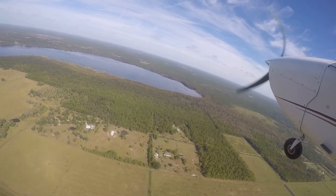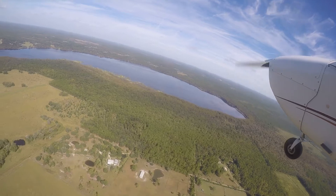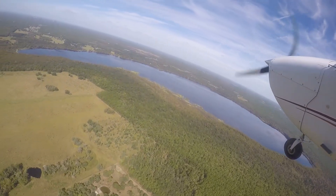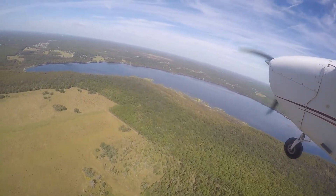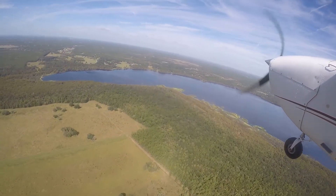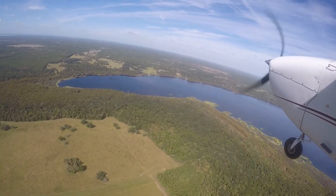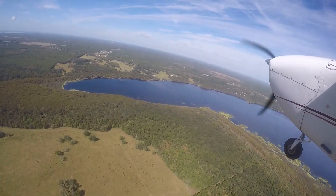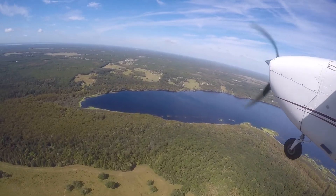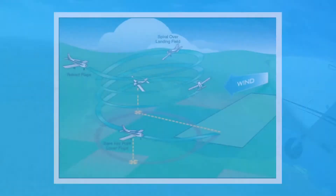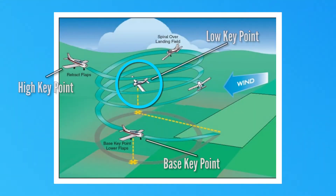Upon arriving over the high key point at 1,000 feet above ground level, the pilot should begin circling to dissipate altitude to arrive at the low key point. The low key point is abeam the point of intended landing and should be arrived at as close to 800 feet above ground level as possible.